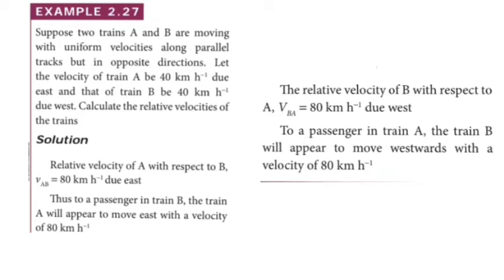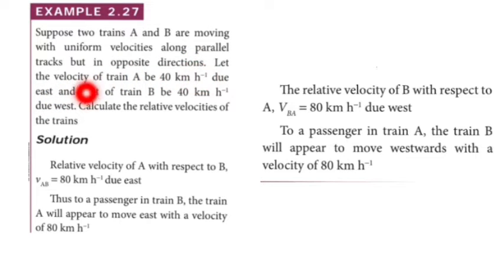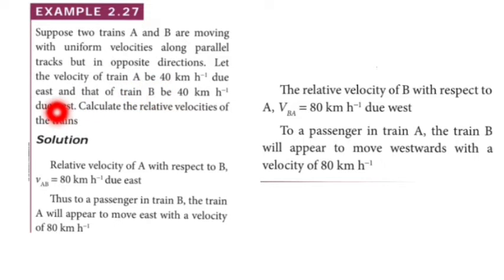See the first one, that is example number 2.27. Suppose two trains A and B are moving with uniform velocities along parallel tracks but in opposite directions. Let the velocity of train A be 40 km per hour due east direction, and train B be 40 km per hour due west direction. Both velocities are equal but directions are opposite.